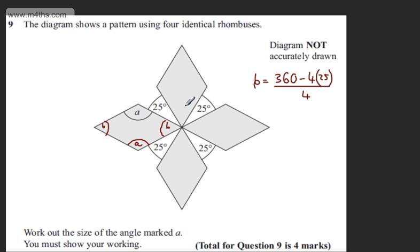All I've done is taken the 25s away from 360 and divided by four to get angle B. From this we can see that B equals 260 divided by four, which gives us B equals 65 degrees.